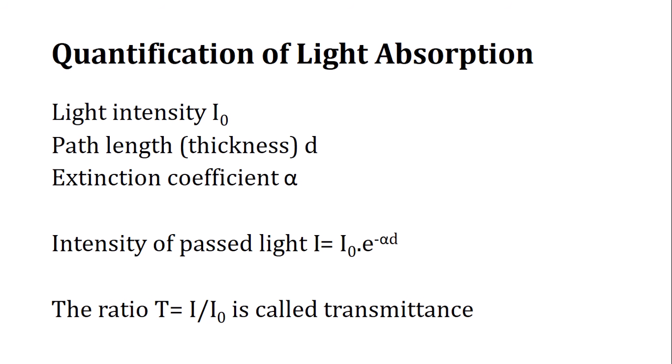For example, if I is equal to I₀, the I/I₀ ratio will be 1. This ratio cannot go more than 1. What does it mean? The same amount of light that is incident is coming out, meaning the system on which we are shining the light is not absorbing anything.